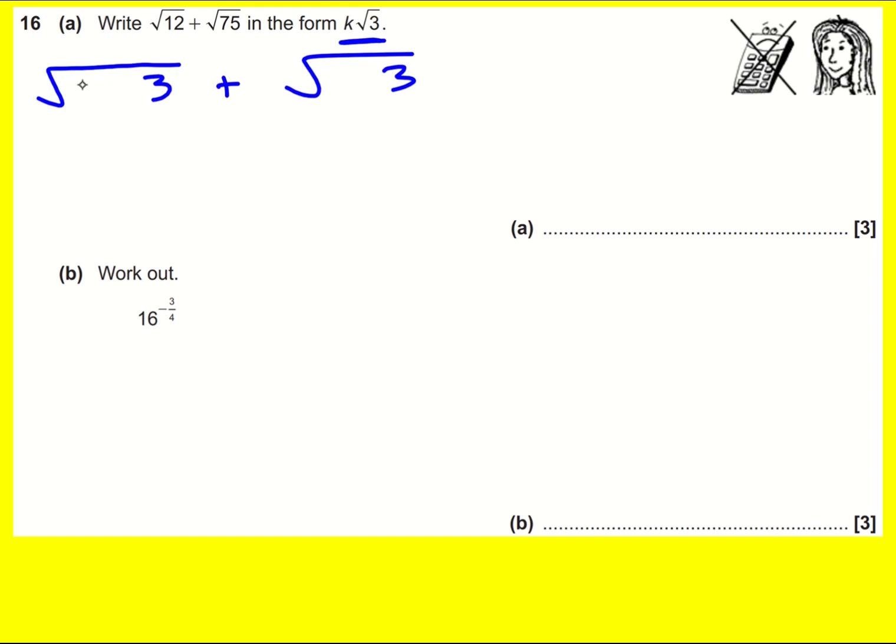How are we going to do that? Well, √12 is √4 × 3 and √75 is √25 × 3. Both of these are square numbers so it's all going to work out now.